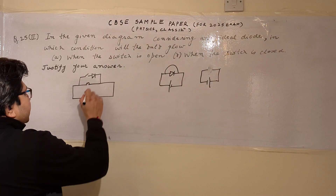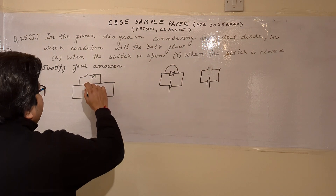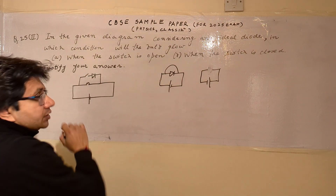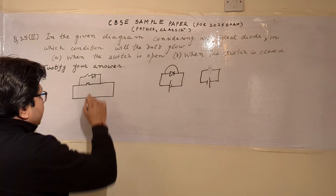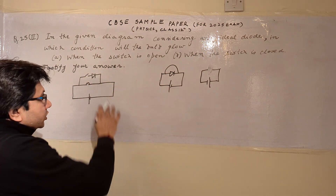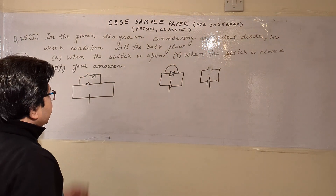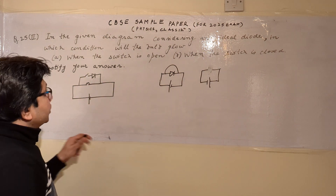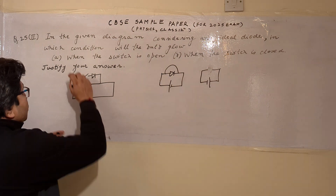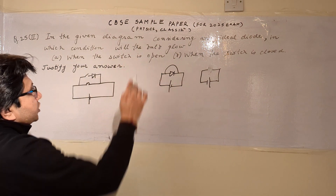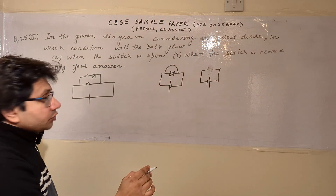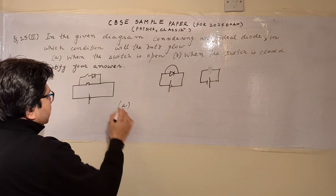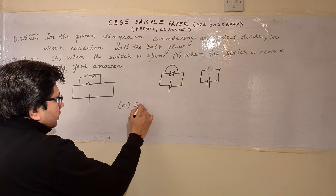In this particular circuit, the diode is connected such that there is a switch in series with it. The question is: what happens when the switch is open?